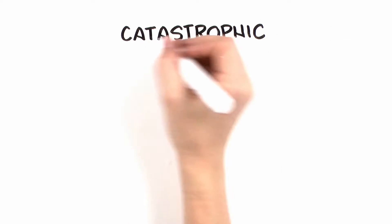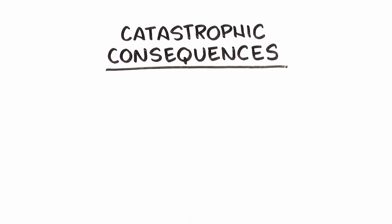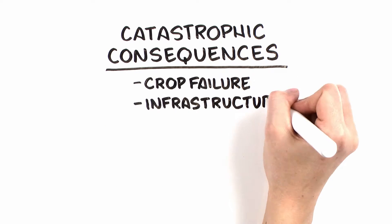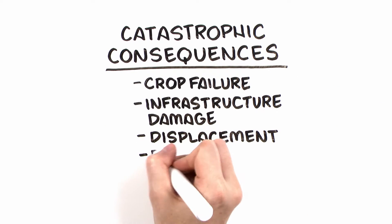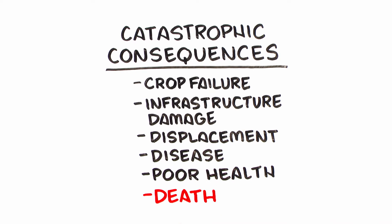Extreme weather can have catastrophic consequences, including crop failure, infrastructure damage, displacement, spread of disease, poor health, even death.